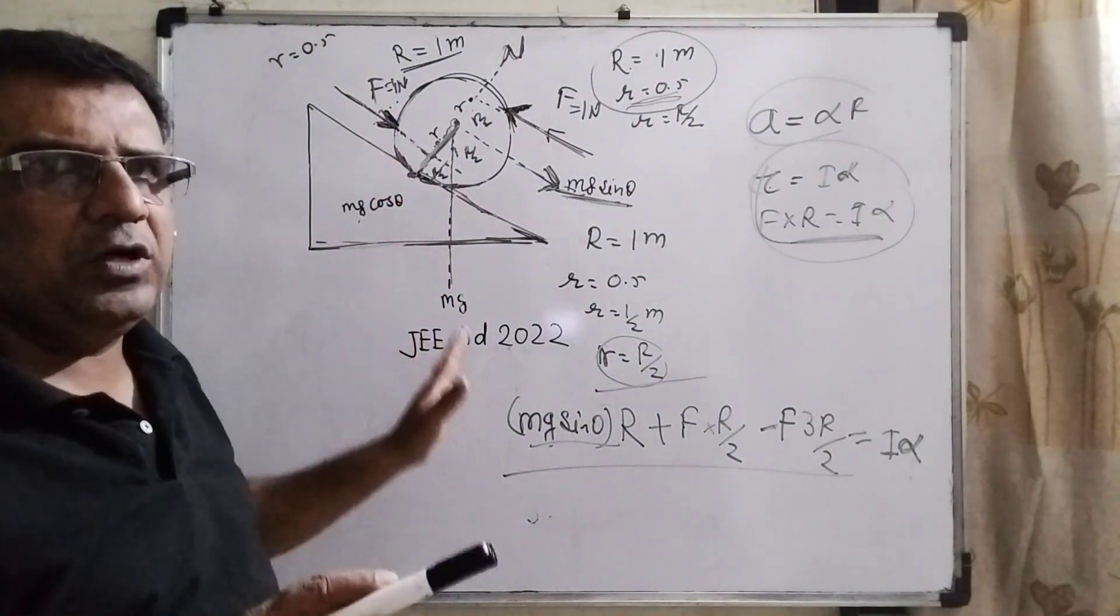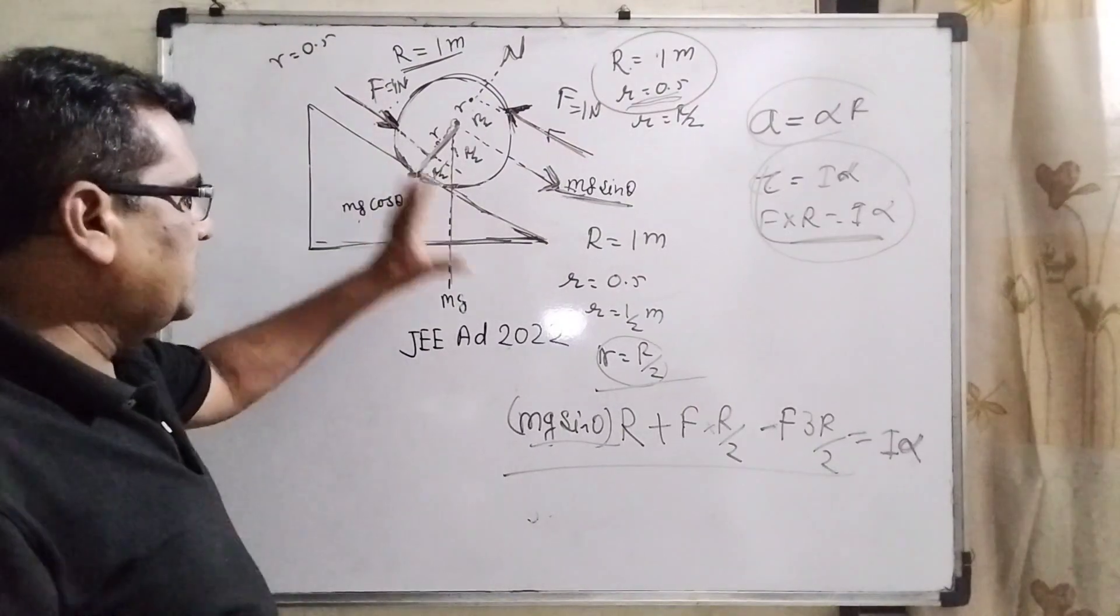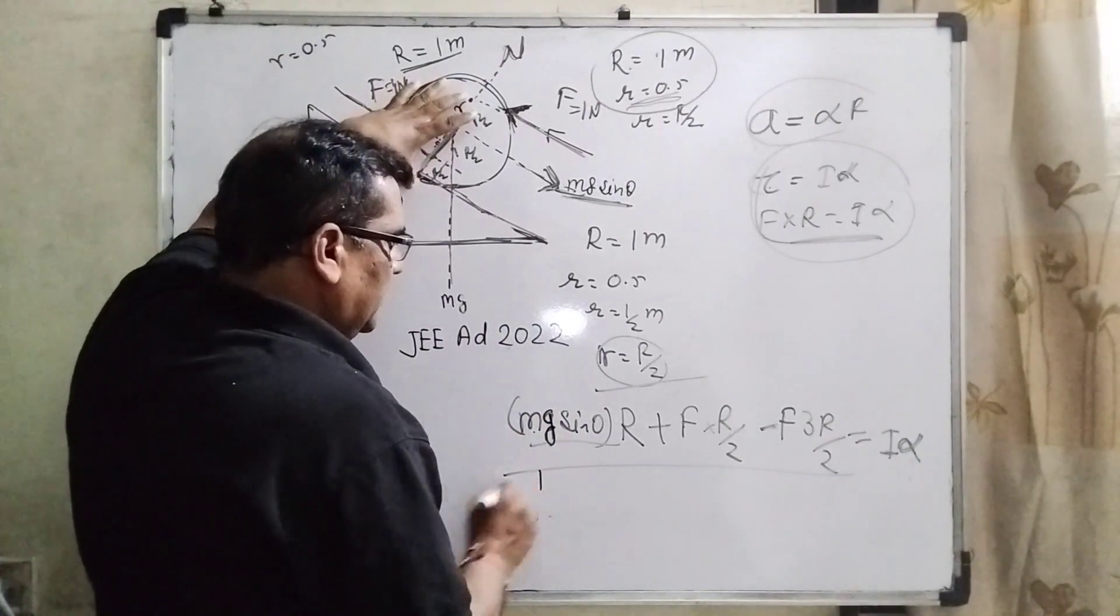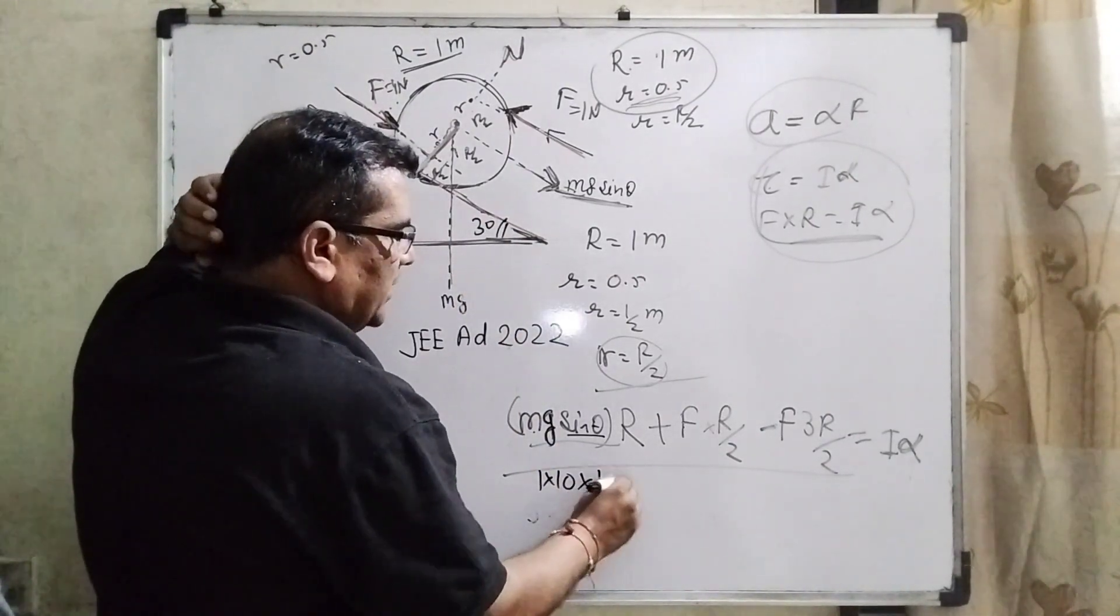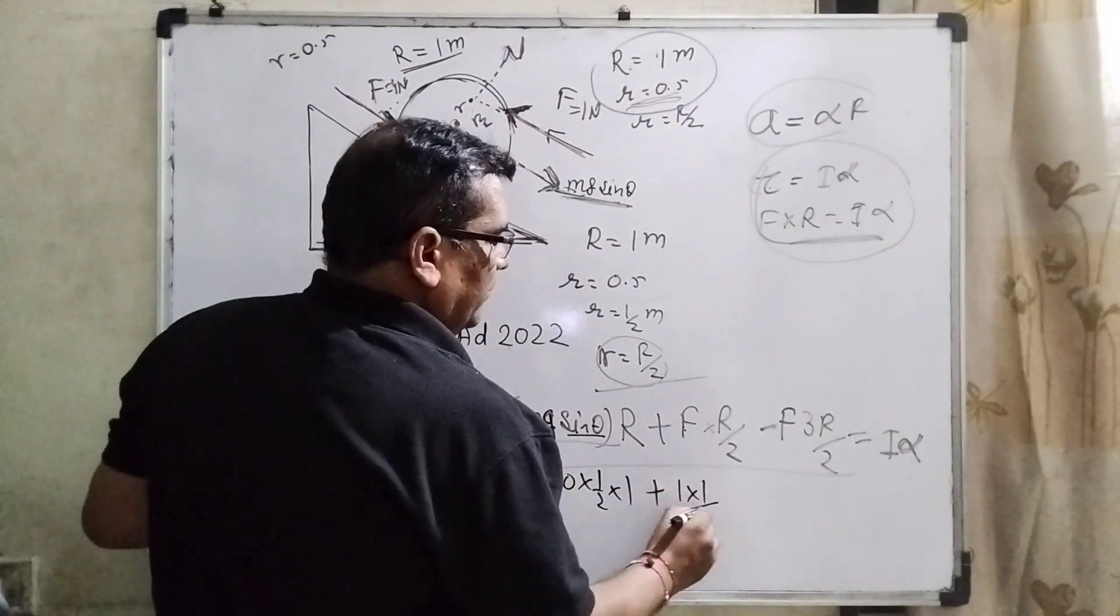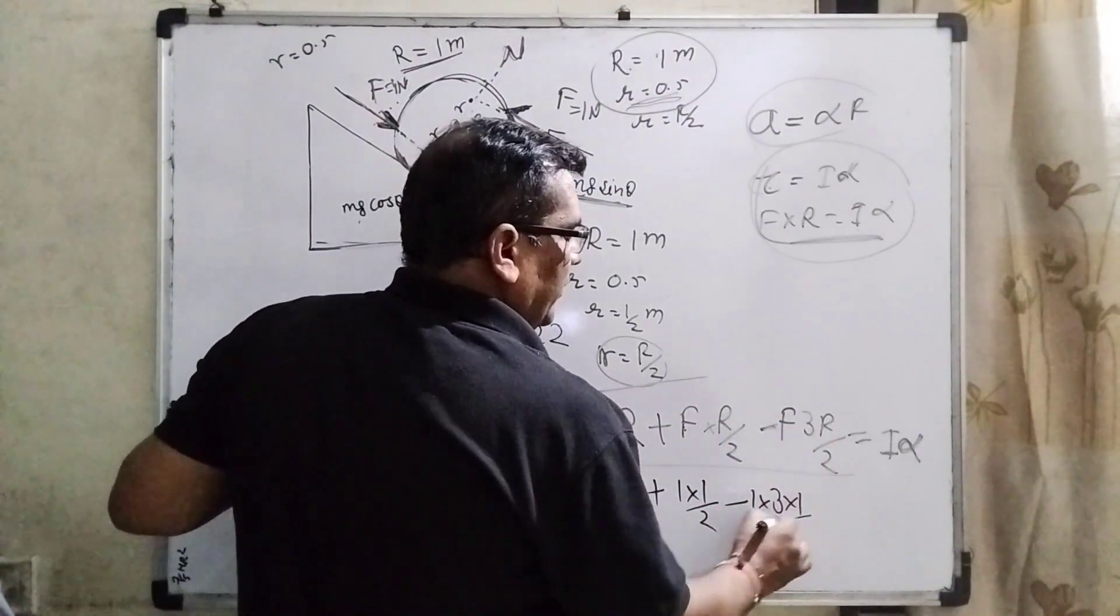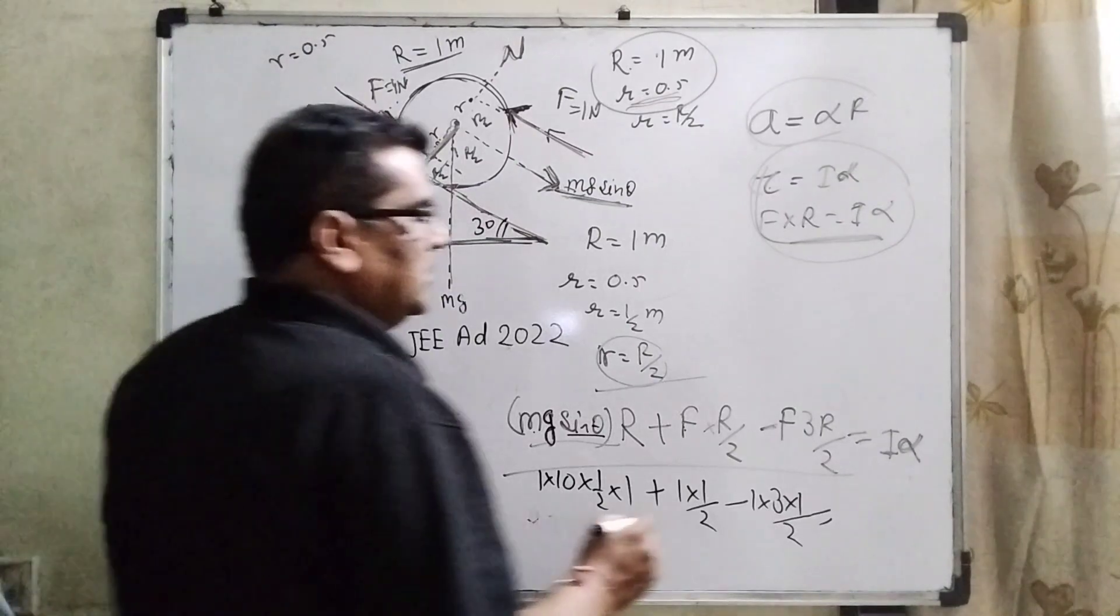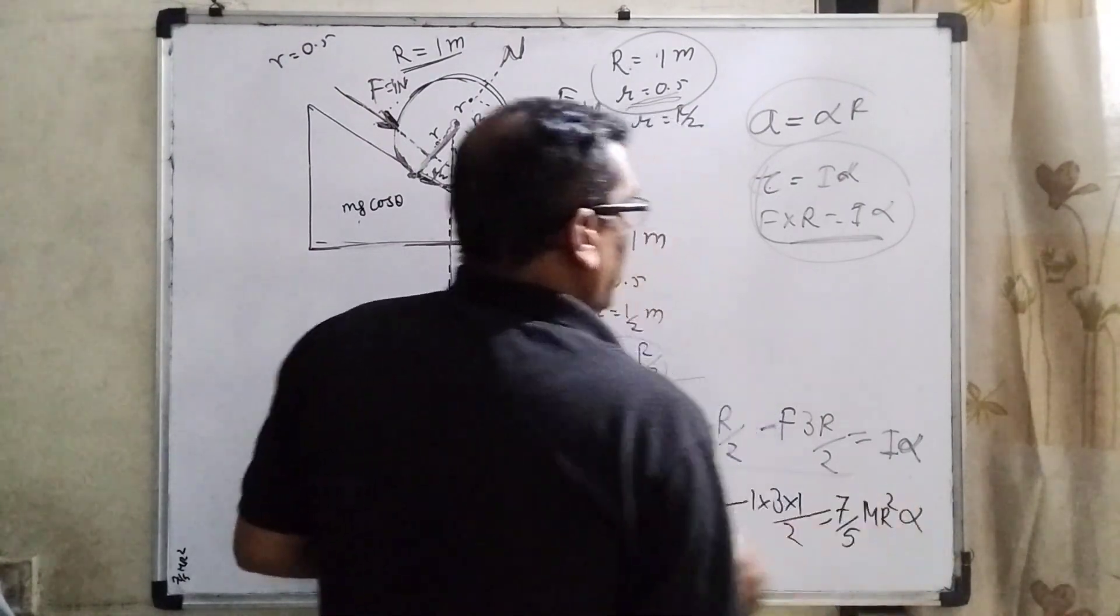Here we have not taken friction because friction is not illustrated in the question. Now substitute all these values: mass of this solid sphere is 1, g we can take as 10, sin theta—here theta is given as 30 degrees—so 1 by 2, r is again 1 plus f is 1 Newton already given, and r is 1 times 1 by 2, and here f is 1, 3r is all again 1 times 1 by 2, and I alpha. Yes, moment of inertia through the tangential is 7 by 5 mr square and alpha.